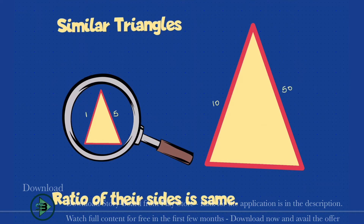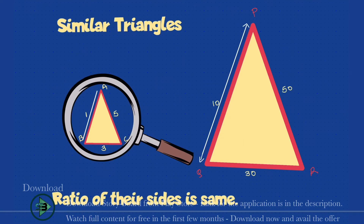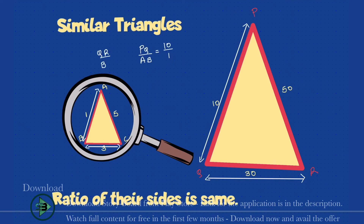For example: side 1 becomes 10, side 5 becomes 50, side 3 becomes 30 — multiplied by 10. If PQR is an amplified version of ABC, the ratio of their sides will be the same. PQ upon AB is 10 upon 1, which is 10. QR upon BC is 30 upon 3, which is again 10. I am proving that the ratio of corresponding sides comes out to be the same.